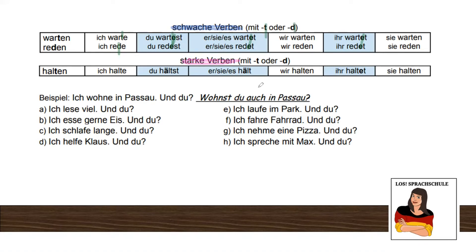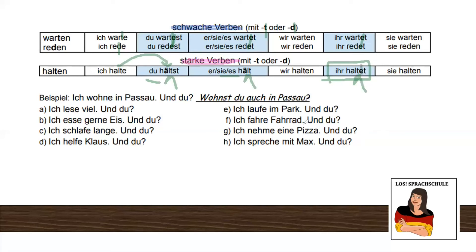So please remember: if a d or t is involved with weak verbs, you add an e to make it sound better. With strong verbs it's a little different — the point of attention shifts to the umlaut or vowel change, so it doesn't sound bad anymore. For example, 'hält' sounds much better — you don't have to say 'heltest.' If it's a strong verb with t or d, for 'you' and 'he/she/it' you don't need an extra e, but for 'you plural' you do. Leave a comment below if this makes sense!